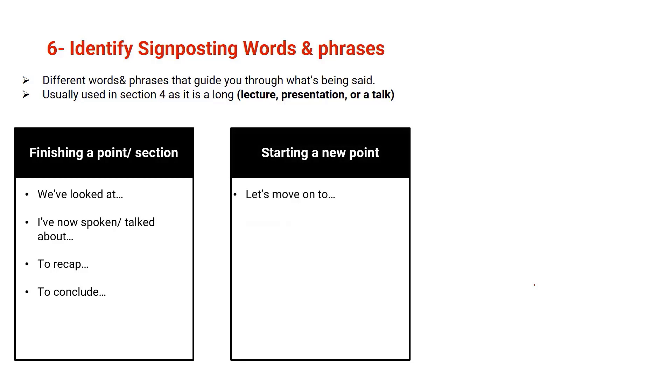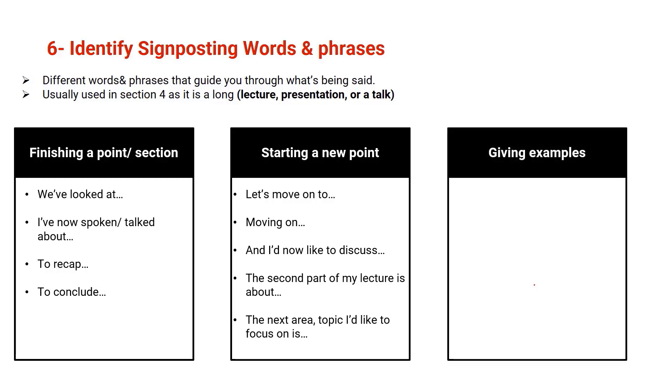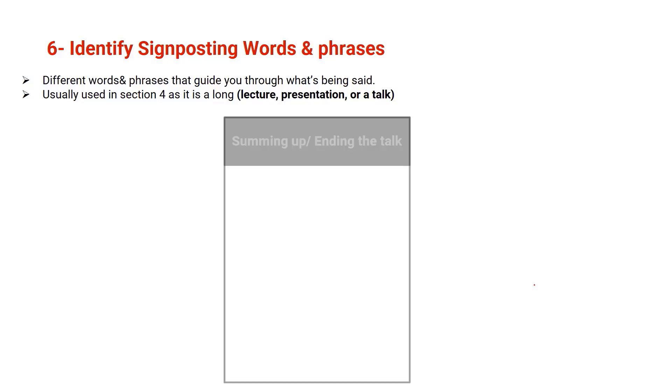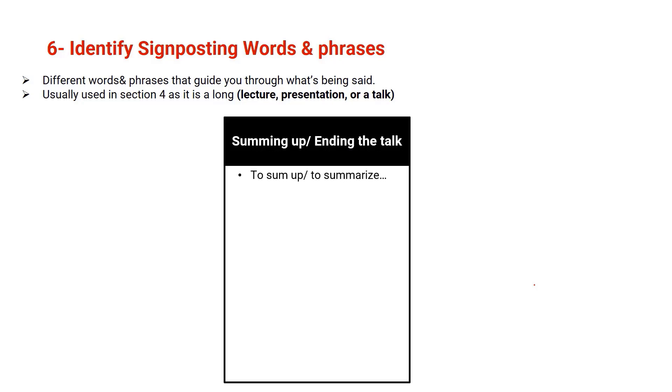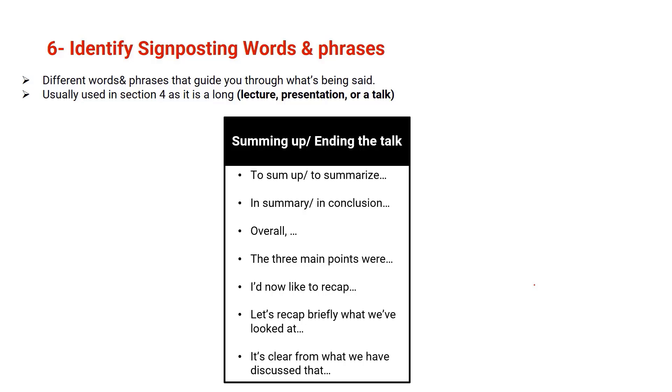Starting a new point: let's move on to, moving on, and I'd now like to discuss, the second part of my lecture is about, the next area or topic I'd like to focus on is. Giving examples: for example or for instance, two examples of this are, a clear example of this is. Summing up or ending the talk: to sum up or to summarize, in summary or in conclusion, overall, the three main points were, I'd now like to recap, let's recap briefly what we have looked at, it's clear from what we have discussed that.